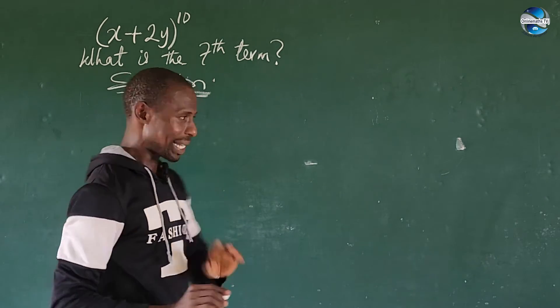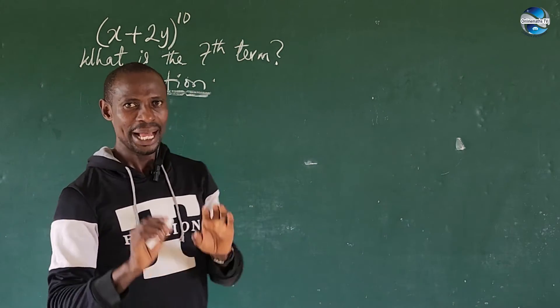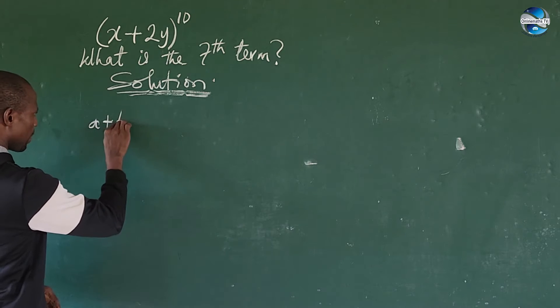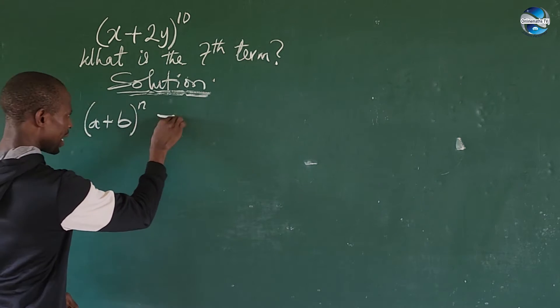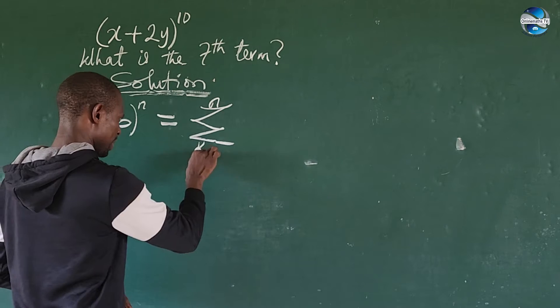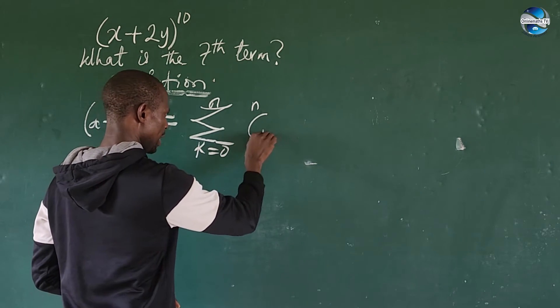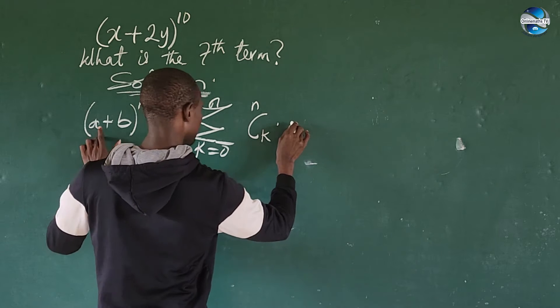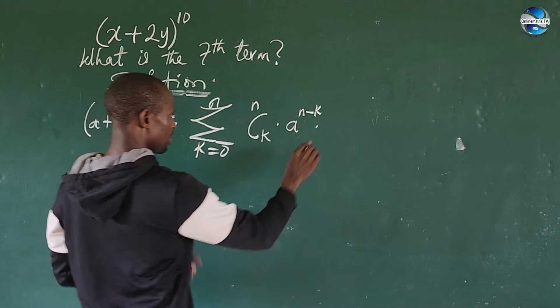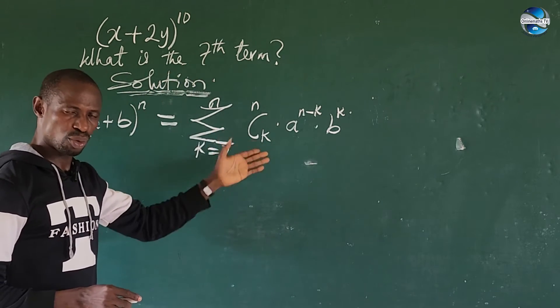So how do we get the seventh term? Like I said earlier, if we are to multiply this step by step it will take us some time. So what does the binomial theorem say? It says that if you have, let's assume you have (a + b)^n and you have to expand this, this will give us the summation from k=0 to n.